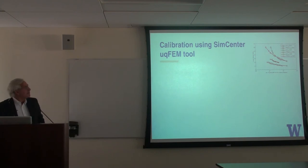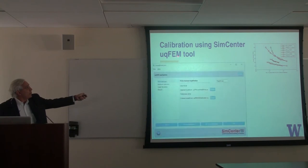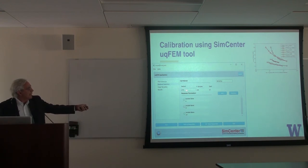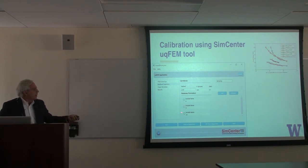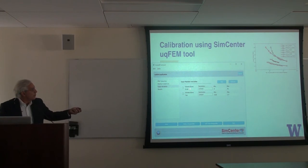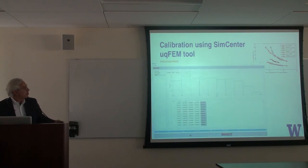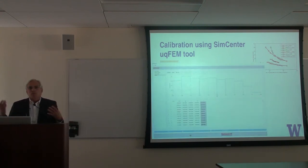We have also been working with the SimCenter, which developed an uncertainty quantification FEM tool. We included our mixed driver in that framework, allowing us to select the method for uncertainty quantification — such as Latin hypercube sampling — with the number of samples and seed value. The uncertain variables include N160, H0, and the shear modulus. We are running these analyses on Stampede, specifying the number of processors and nodes, and looking at the results.